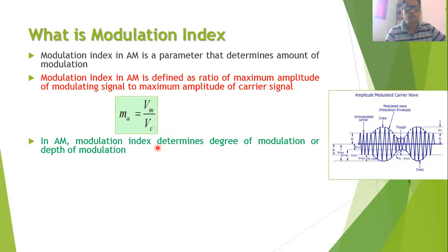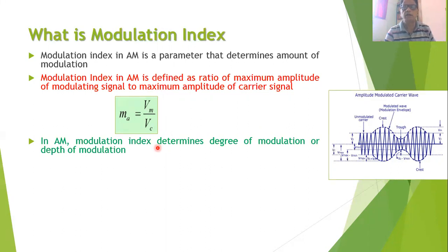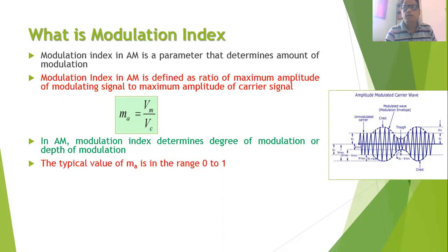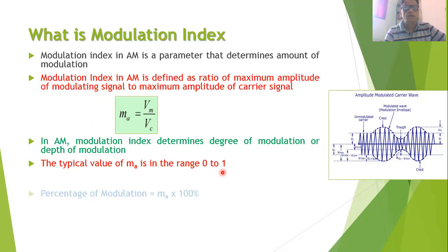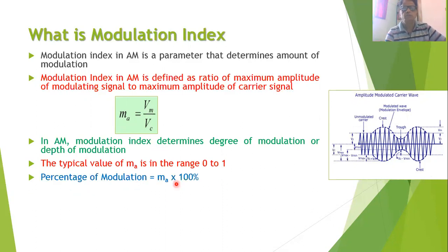In AM, the modulation index determines the degree or depth of modulation. The typical value for the modulation index is in the range of 0 to 1, so normally it is a fractional value. When we want to determine the percentage of modulation, we take the value of m_a and multiply by 100.